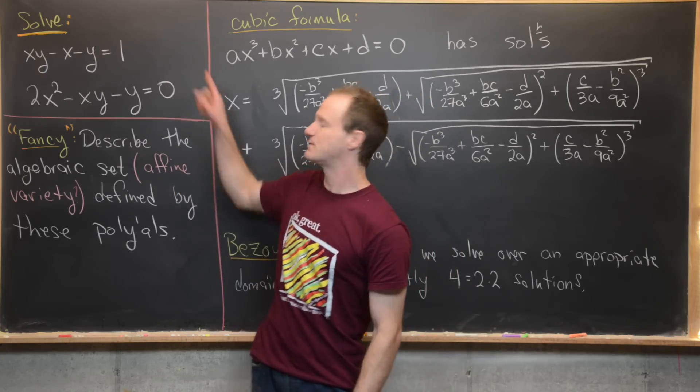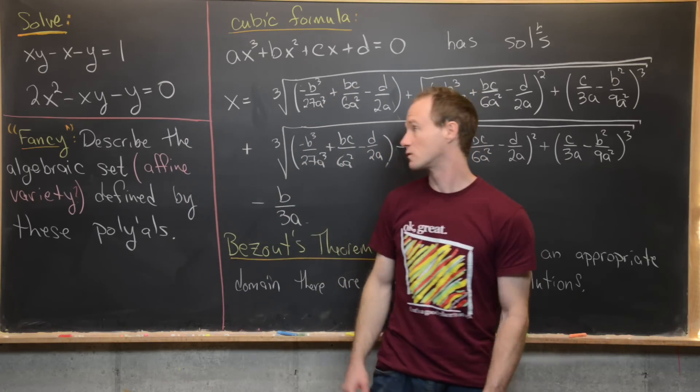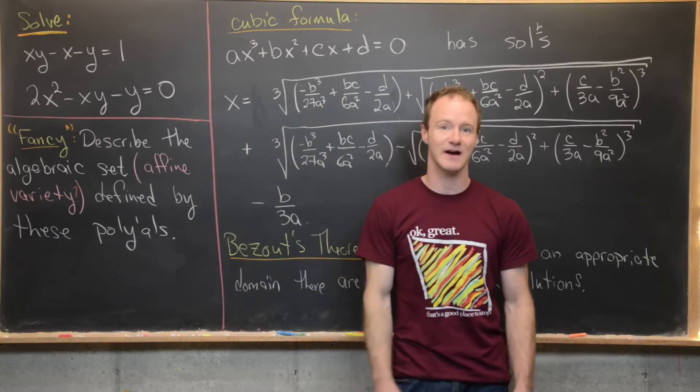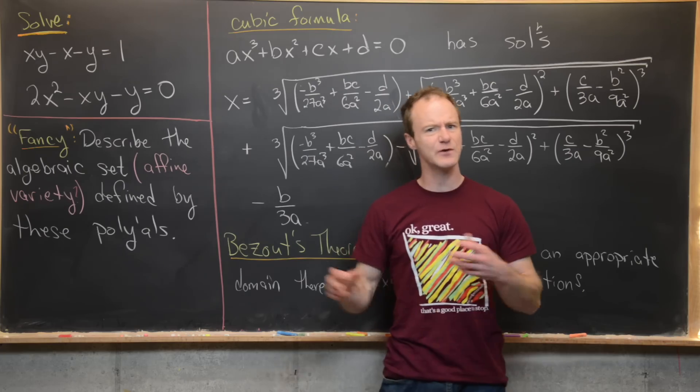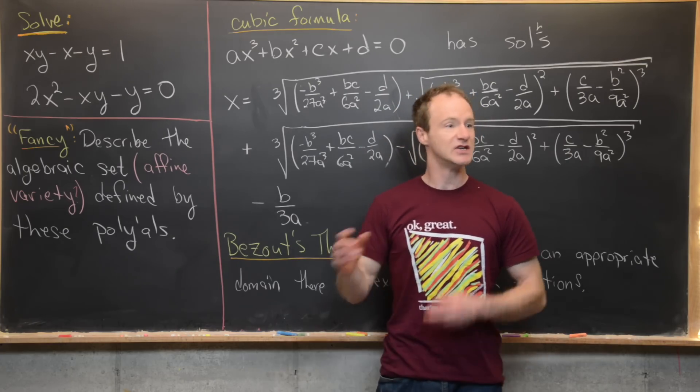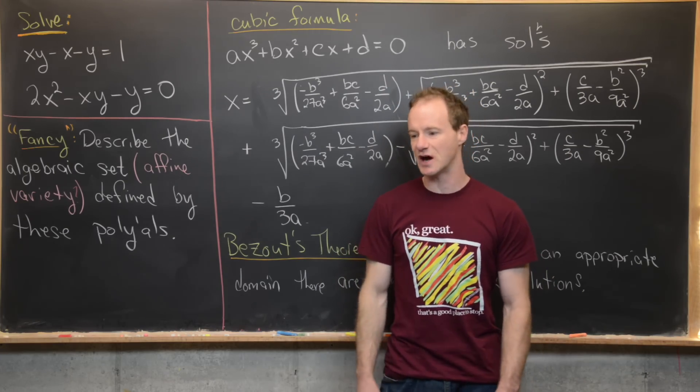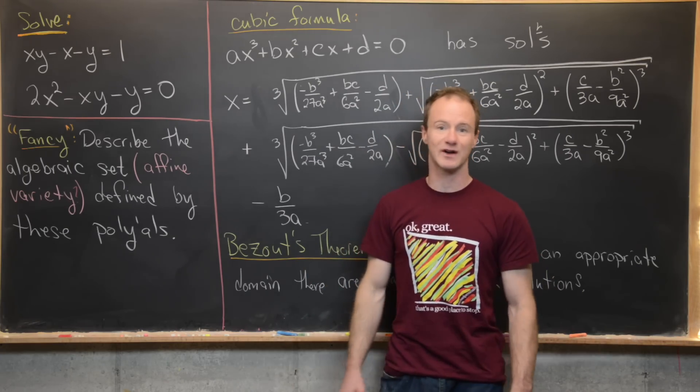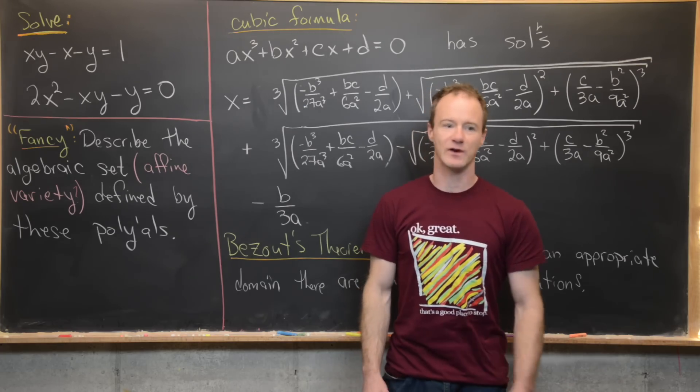And I want to point out that if these polynomials satisfy some certain rules this is actually an affine variety. So if you ever want to sound fancy just use some terms from algebraic geometry or somehow get the word category in there and everyone will think you're super smart.